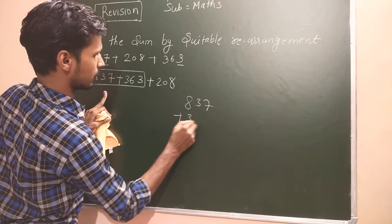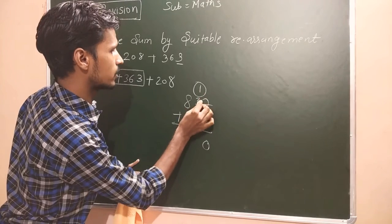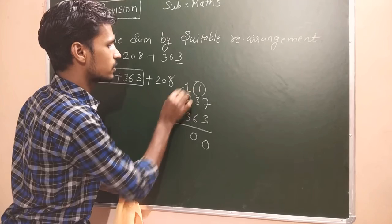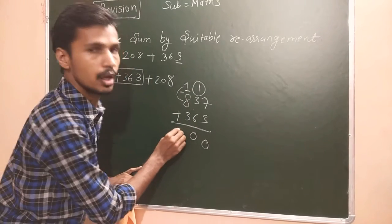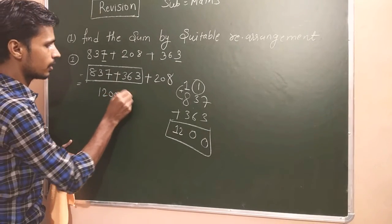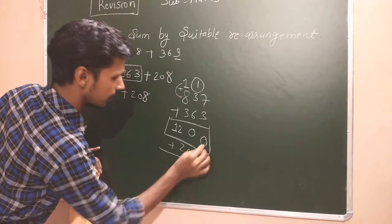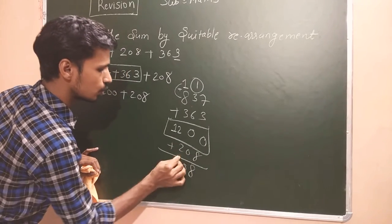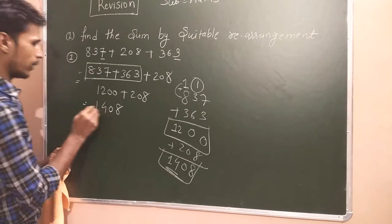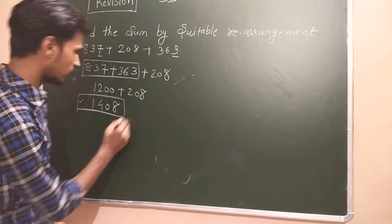837 plus 363. 7 plus 3 is 10, carry 1. 1 plus 3 is 4, 4 plus 6 is 10, carry 1. 1 plus 8 is 9, 9 plus 3 is 12. It will become 1200. Now 1200 plus 208: 0 plus 8 is 8, 0 plus 0 is 0, 2 plus 2 is 4, and 1. Answer is 1408. This is our answer.